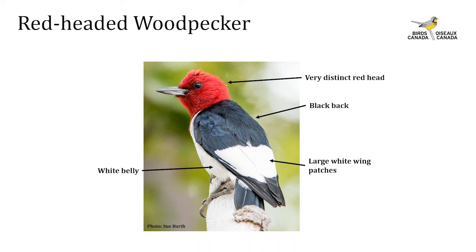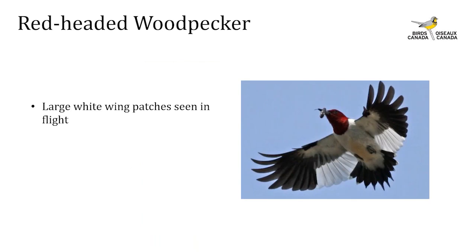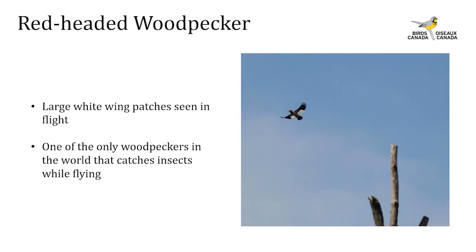The red-headed woodpecker is a very distinct-looking woodpecker with a velvet red head, black back, and large white wing patches with a white belly. Males and females are monomorphic — meaning they are indistinguishable. In flight, those large white wing patches become even more apparent. During the breeding season they are aerial insectivores that sally from a branch to catch insects and return to the same branch — one of the few woodpeckers in the world that fly-catches for food.